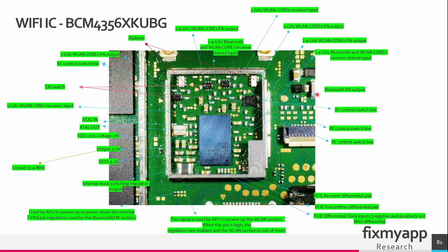This is the Bluetooth output. On these capacitors you can measure the PCIe differential pair signals for the receiver part and the transmitting part. Also the clock signal of 100MHz can be measured here, and all these signals will go to the APU. On this pad the signal is used by the APU to power up the Wi-Fi section — when this pin is high, the regulators on this chip are enabled and the Wi-Fi comes out of reset and will start. On this pad, the APU powers up or powers down the internal voltage regulators in this chip, which are used by the Bluetooth and FM section. Also this frequency is 37.4MHz.